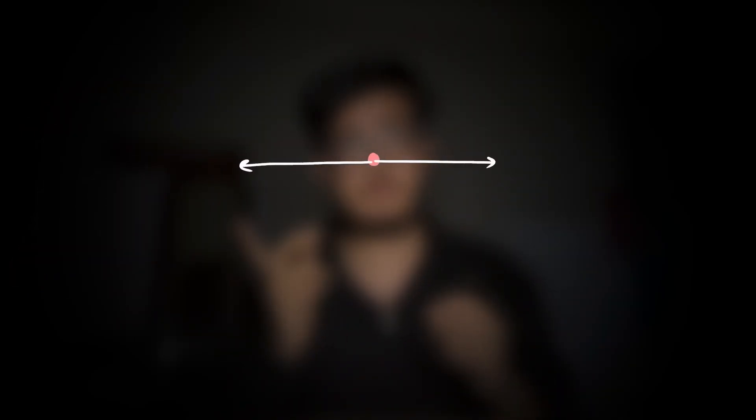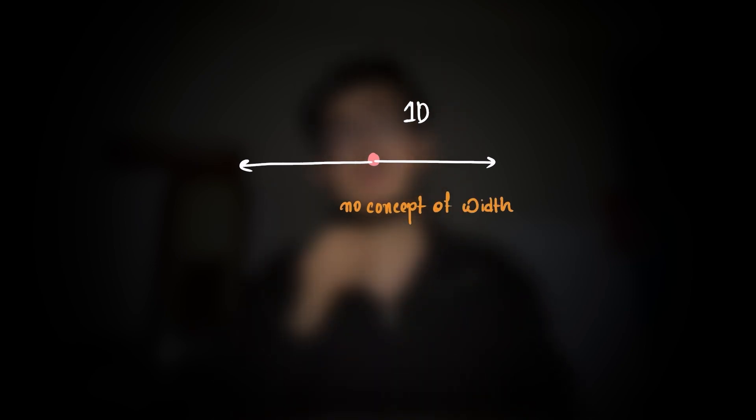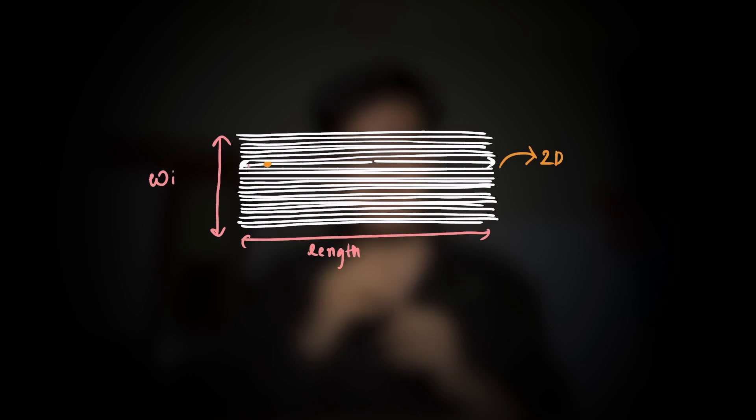Imagine a world where you can only move forward and backward, no left or right. It's one dimension, a straight line with no width. A creature living here would be completely unaware of anything outside this line. When we introduce variation in this line and start taking lines next to each other, this forms a plane or 2D space with both length and width.